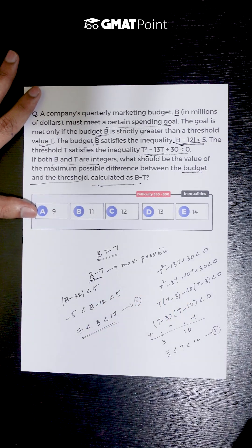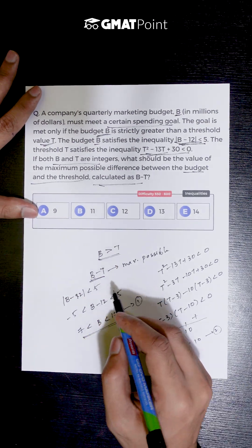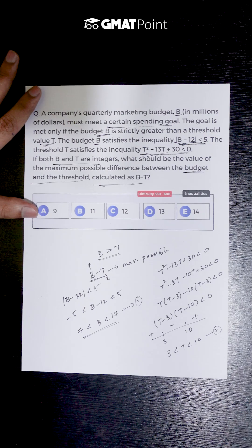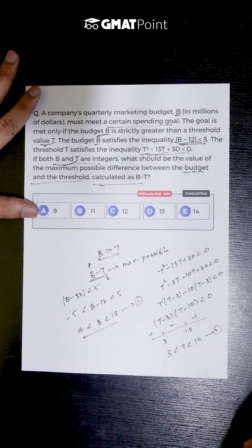Now we are asked to calculate the maximum possible value of B - T. For it to be maximum, the value of B must be maximum and the value of T must be minimum, and we are given that the values of B and T are integers.